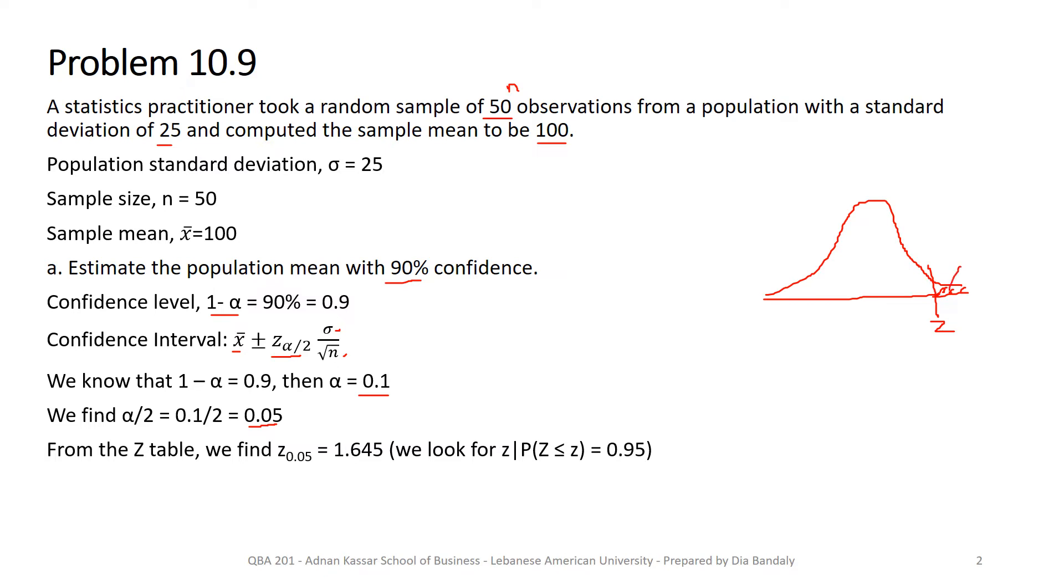If this is 5%, that means this is 95%. And this is important for us because the z table tells us the z value corresponding to the area from the lower tail up to that cutoff point.